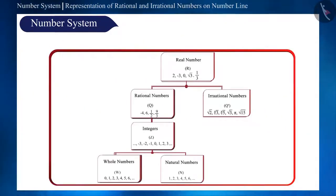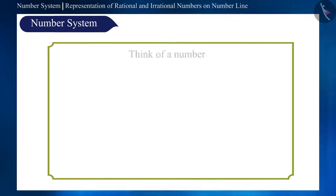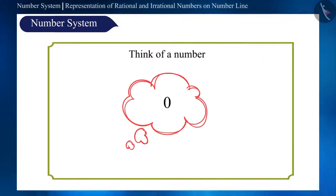Friends, we know that the collection of rational and irrational numbers together form real numbers. So if I ask you to think of any number, I cannot predict if the number chosen by you is a natural number, an integer, or a decimal number. But I can surely say that the number you thought of would be a real number.